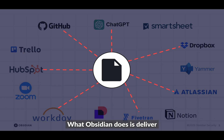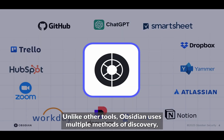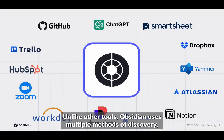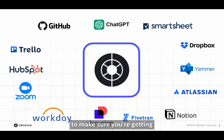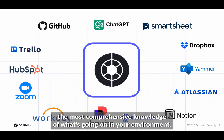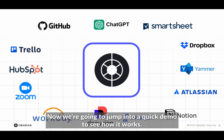What Obsidian does is deliver centralized visibility and control over all these apps. Unlike other tools, Obsidian uses multiple methods of discovery, including email metadata scanning, browser detection, and integration analysis to make sure you're getting the most comprehensive knowledge of what's going on in your environment. Now we're going to jump into a quick demo to see how it works.